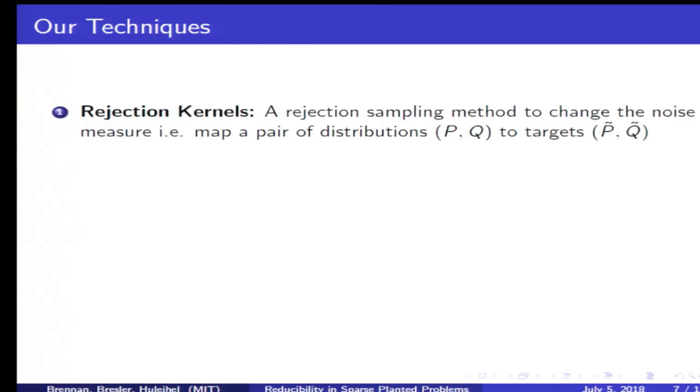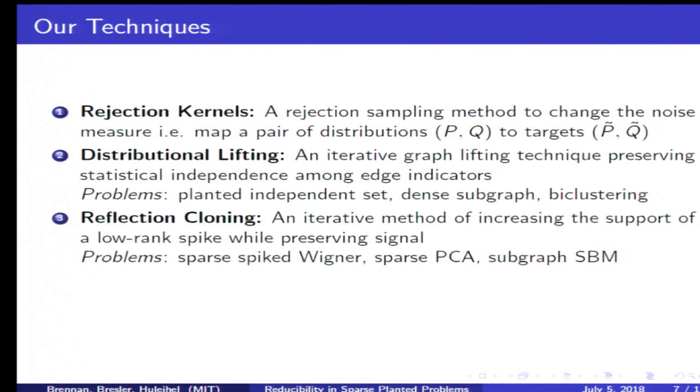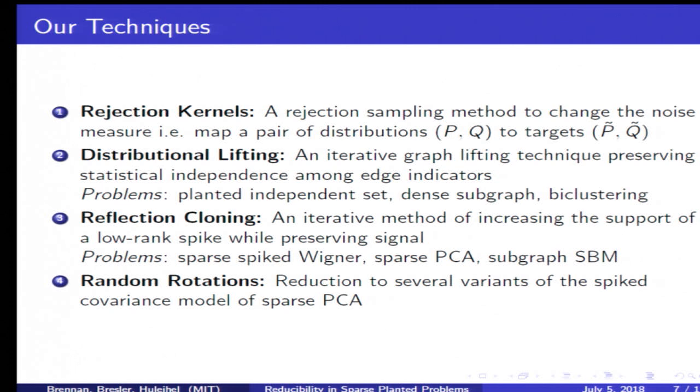I'll briefly outline what these techniques are. We came up with ad hoc names for them. The first is rejection kernels, which provides a computational way of performing a change of measure. This builds on a technique by Ma and Wu. Then we introduce something called distributional lifting, which is a variant of a graph lift that preserves statistical independence between edge indicators in a graph. It also uses a natural intermediate of some matrix which has distributions other than Bernoulli edge indicators, maybe Poisson samples or Gaussian samples, and that turns out to be necessary to achieve exactly the type of trade-off we want. Then reflection cloning, which is just a sharper version of distributional lifting that breaks a symmetry in the distribution. And then a method called random rotations, which maps exactly the spike covariance model.